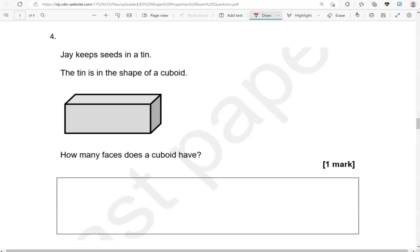Jay keeps seeds in a tin. The tin is in the shape of a cuboid. How many faces does a cuboid have?